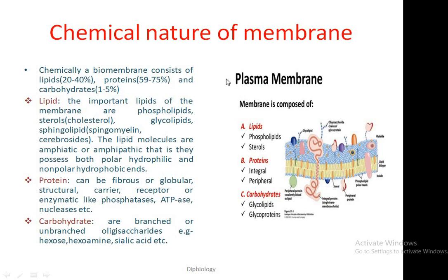Chemical nature of membrane — this is a very important part to understand the nature of the plasma membrane. Chemically, plasma membrane consists of lipids, proteins, and carbohydrates. A biomembrane consists of lipids 20–40%, protein 59–75%, and carbohydrate 1–5%, which is the least in composition.